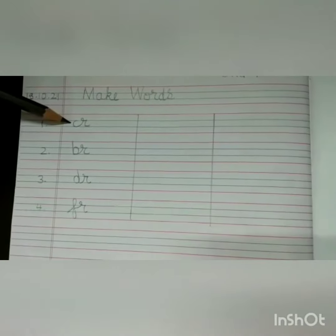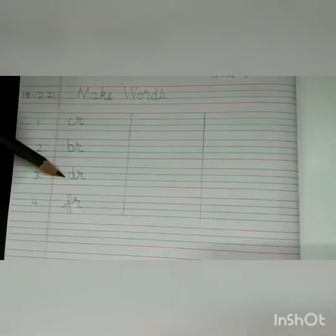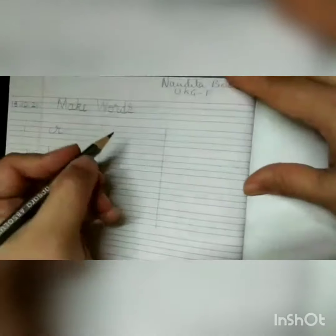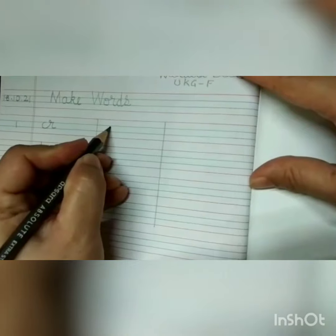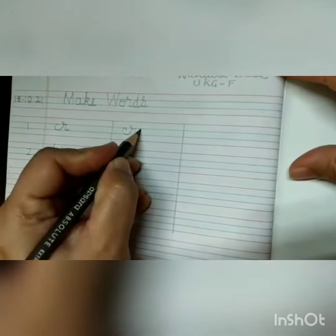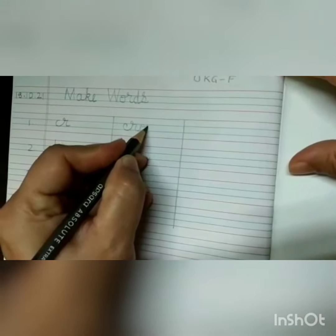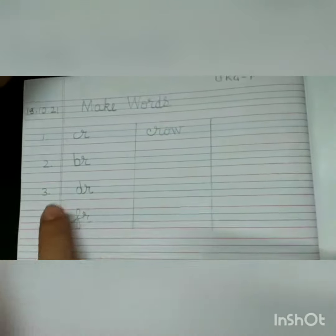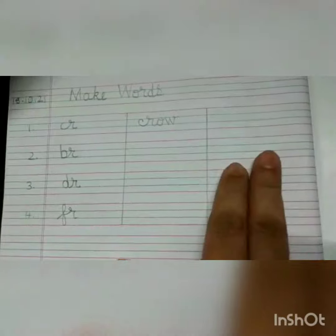Here you will make three columns. First you will write 'cr', then 'br', then 'dr', and then 'fr'. You will have to write two words each with these sounds. The first word for 'cr' — I am writing it now. You will write the next word; it can be crown or any other word you want. Then with 'br' you will write two words, then with 'dr' and then with 'fr'.